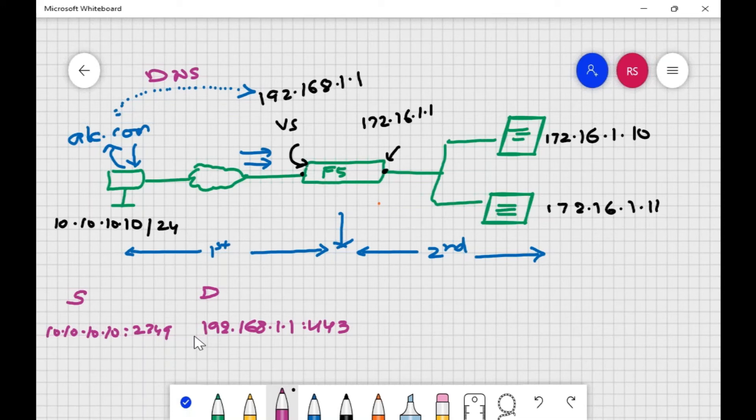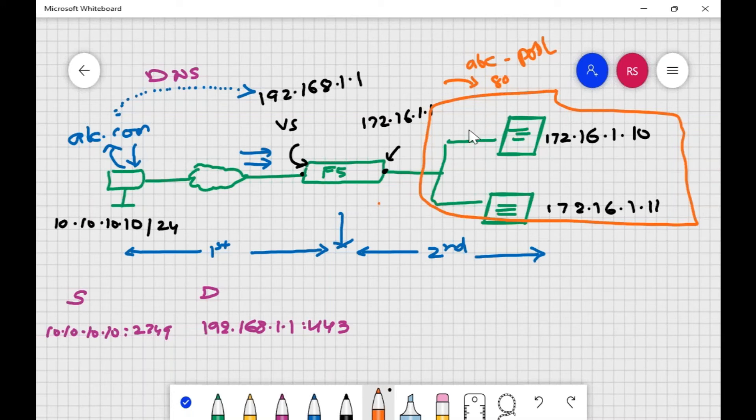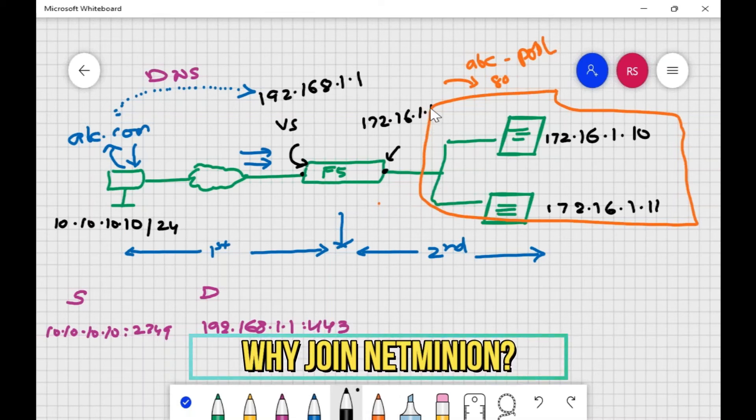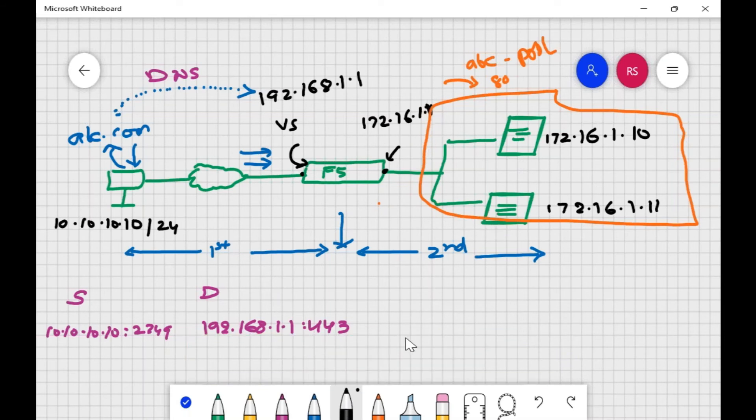This packet will go to F5. F5 will unwrap this packet and see how the traffic is coming. It will check that it is coming for one of my virtual servers and that virtual server is bound with a pool and that pool has two pool members. These should be in the pool - maybe we can say the name is abc_pool. This pool member can be on port 80 if we are doing port translation, or it can be on 443 depending upon your environment.